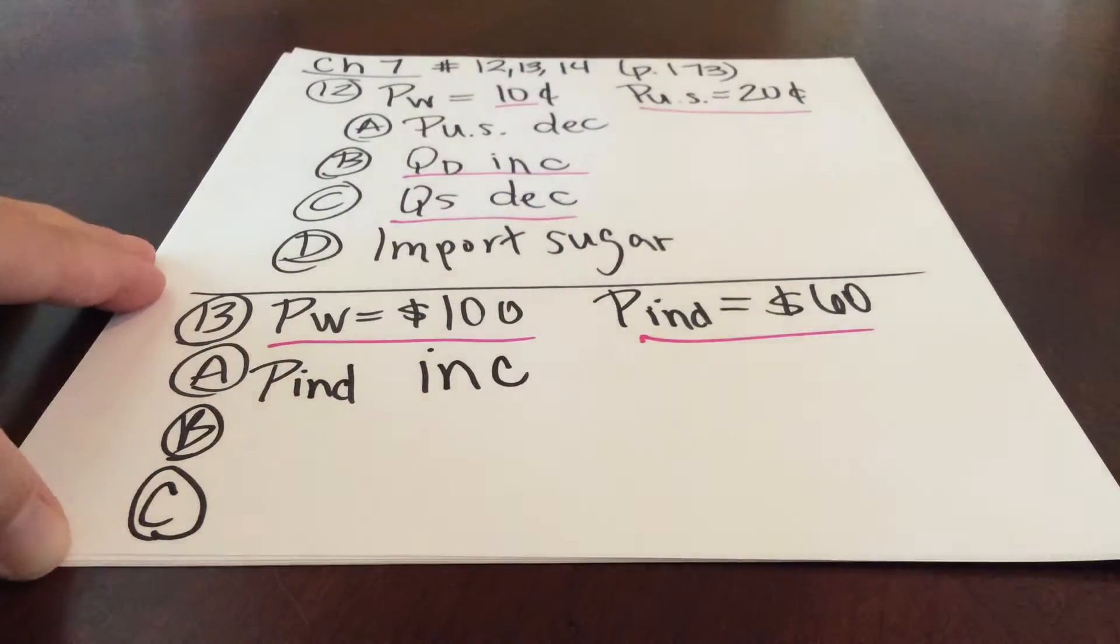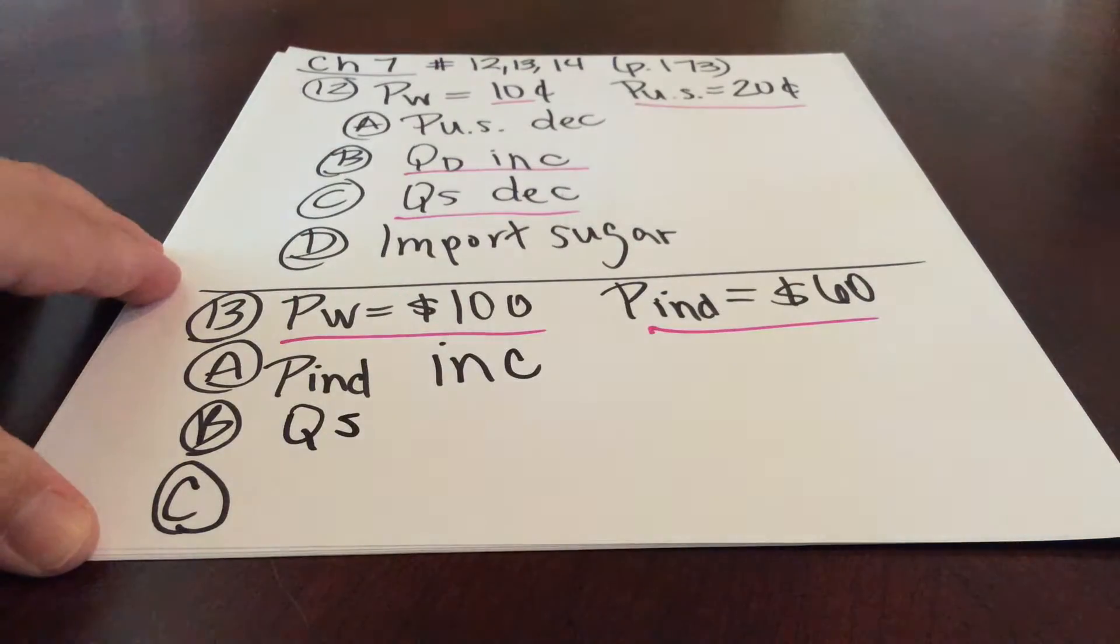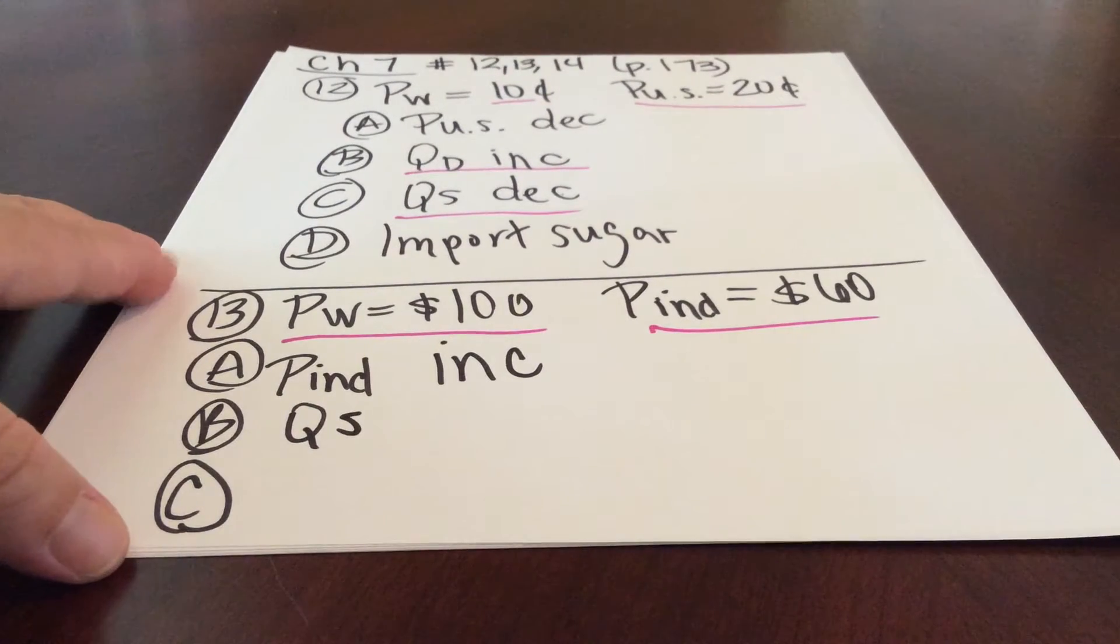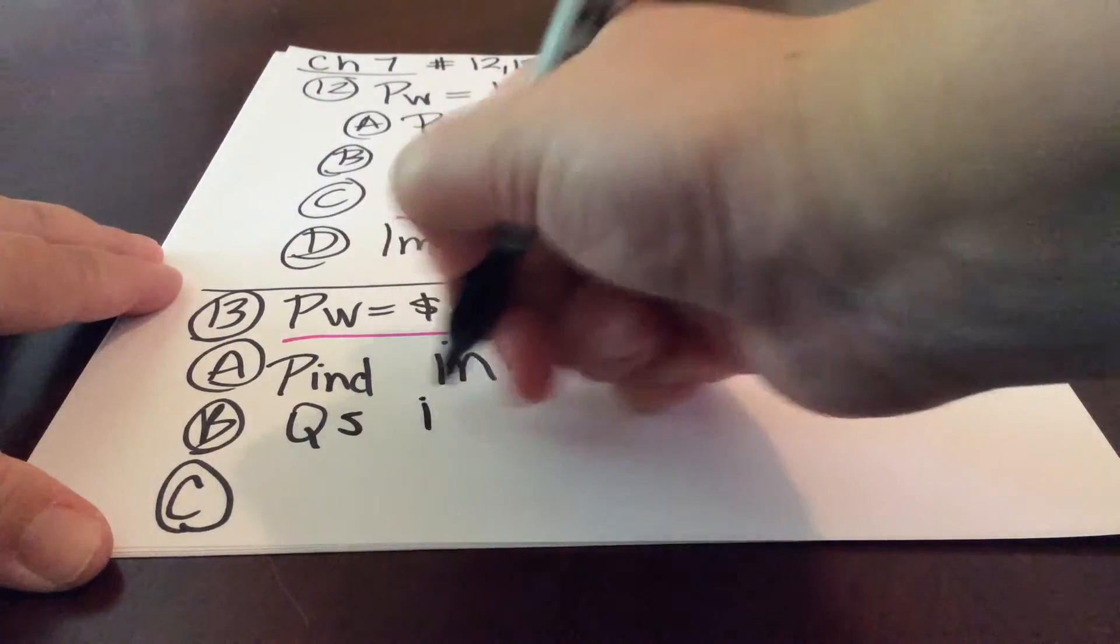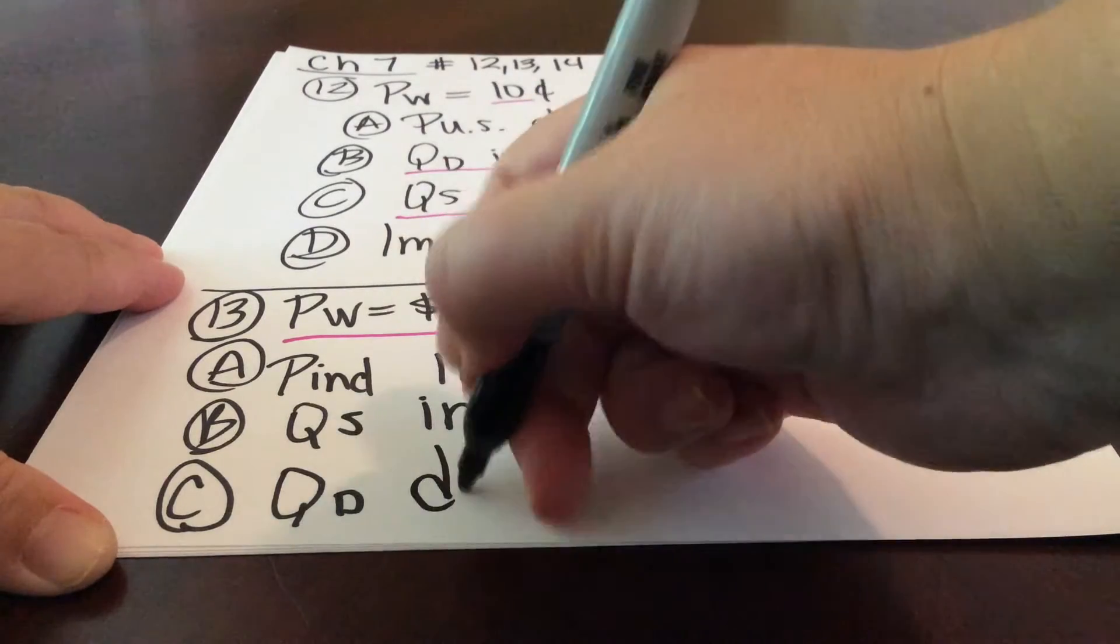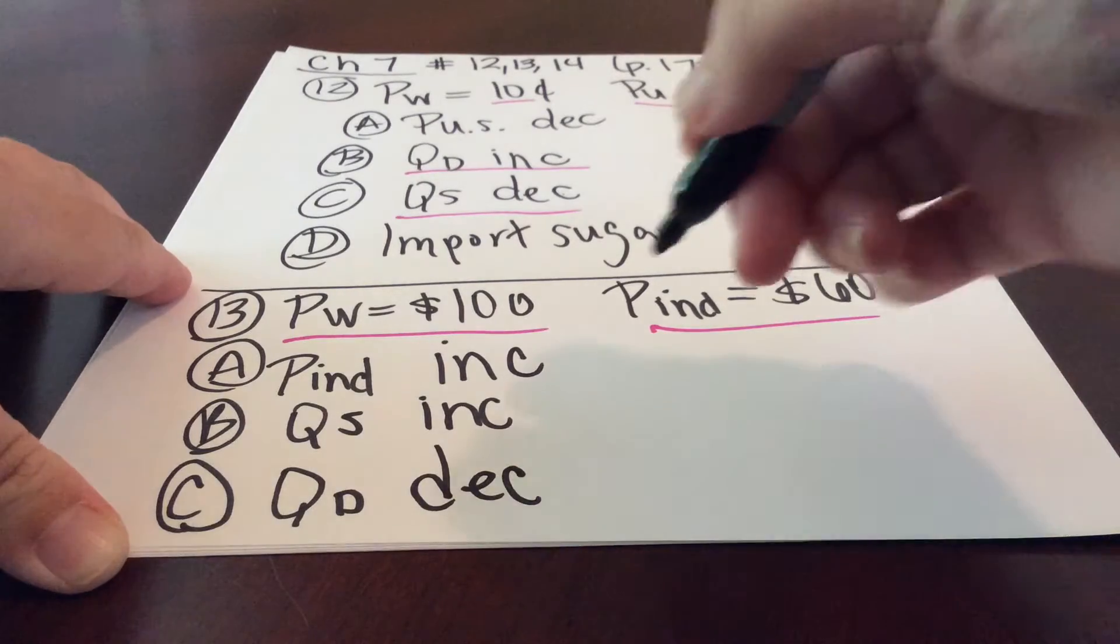How's that going to affect the quantity of steel produced? So we're going to look at quantity supplied first. Again, going by the law of supply, price goes up, and so producers will respond to this higher price by increasing the quantity that they produce. In terms of quantity demanded in the domestic market in India, they're going to respond to this higher price following the law of demand by decreasing the quantity of steel that they bought.